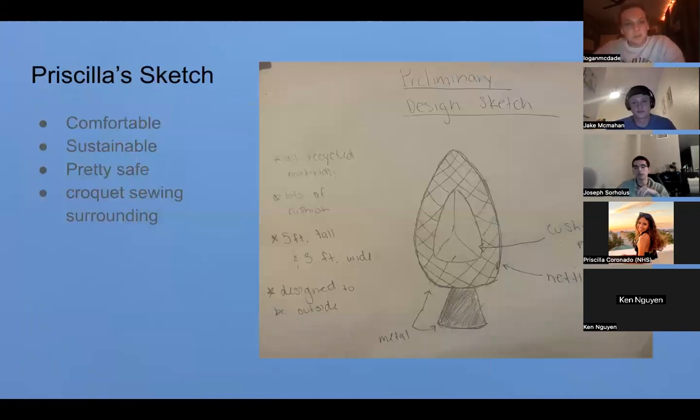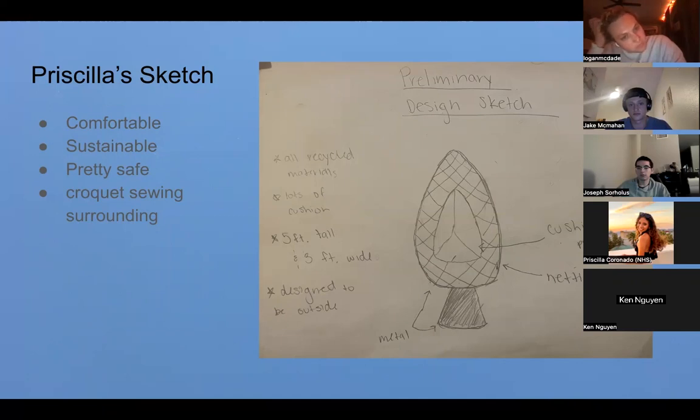Okay, my design is meant to be outside. It's kind of like an outside chair. The center has a lot of cushion so you're able to sink in, and around it is kind of like a netting, like a crocheted netting. It's pretty tall and wide - you're able to crisscross in the chair, sit fully in the chair. It's made out of all recycled materials so it's really sustainable. The metal bar on the cylinder is metal so it's pretty safe, and it's really pretty because it has that crochet knitting on it outside.